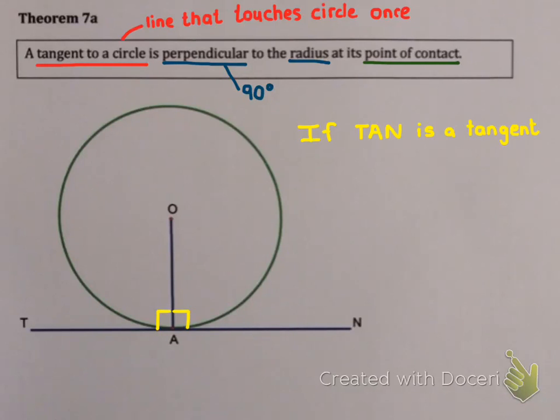So if TAN is a tangent, then OA is perpendicular to TA, and that upside down T is the symbol for perpendicular. Now if we ever need to use this, the reason we're going to use to explain why this angle is 90 is that a tangent is perpendicular to a radius. So we write tan, then the symbol for perpendicular, and then rad for radius.